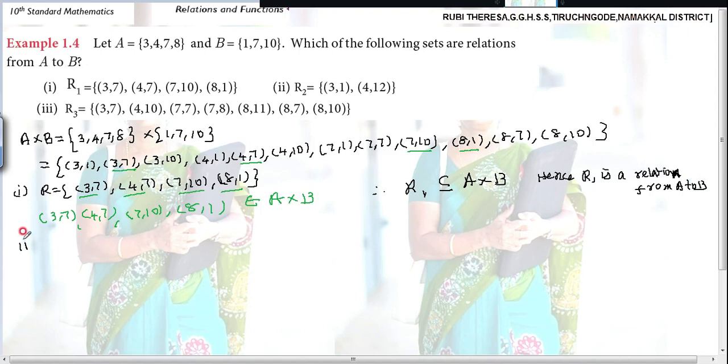Then second subdivision. R2 equal to 3,1, 4,12. Just you check. 3,1. Yes, it is there. 4,12. 12 belongs to A or B? No. So 4,12 is not an element of A cross B. Do you follow?